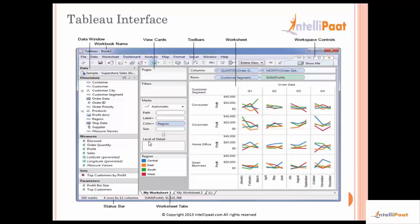Let's go a little further into Tableau Desktop and look at how the Tableau Desktop interface looks. The Tableau Desktop interface is similar to what we see here on the slide. We have different windows for the dimensions and the measures, the data window, and then we have all the shelves — the filter shelf, the page shelf, and the marks cards. This part of the worksheet is very important: the rows and the columns.